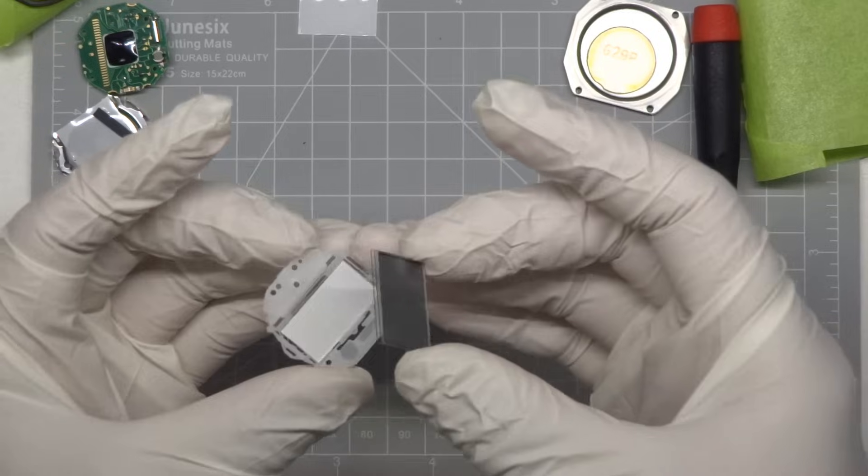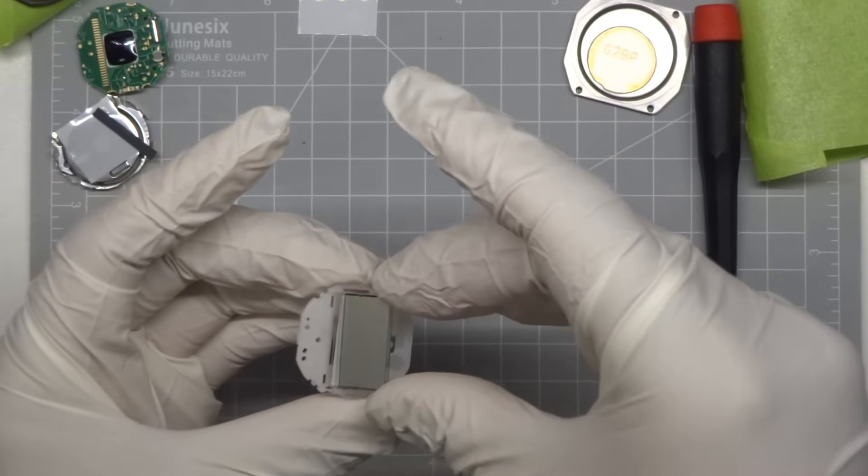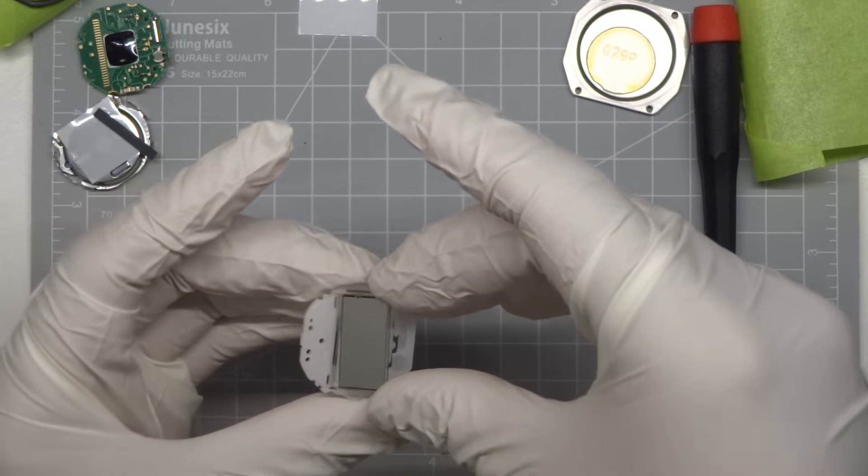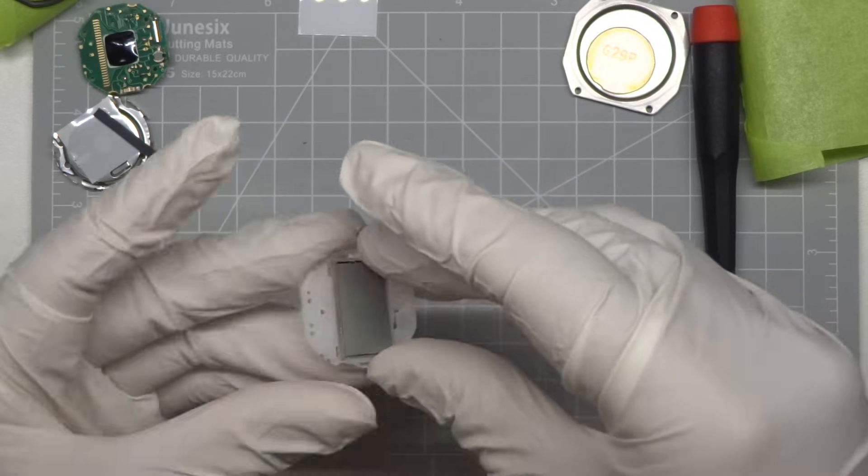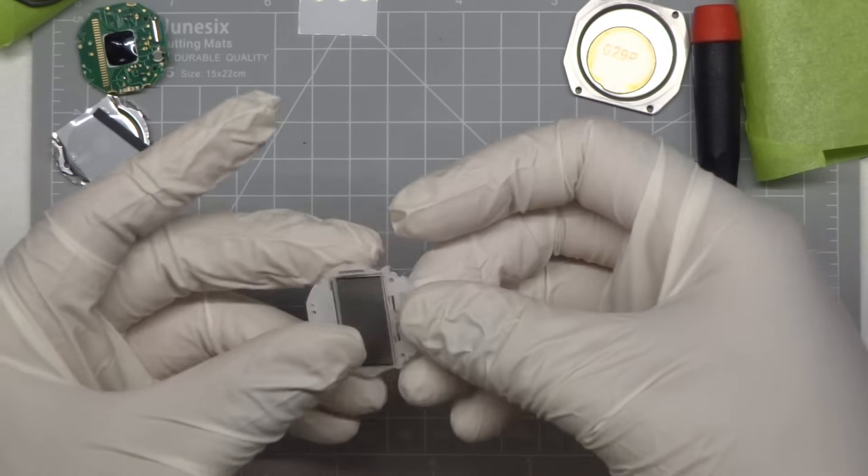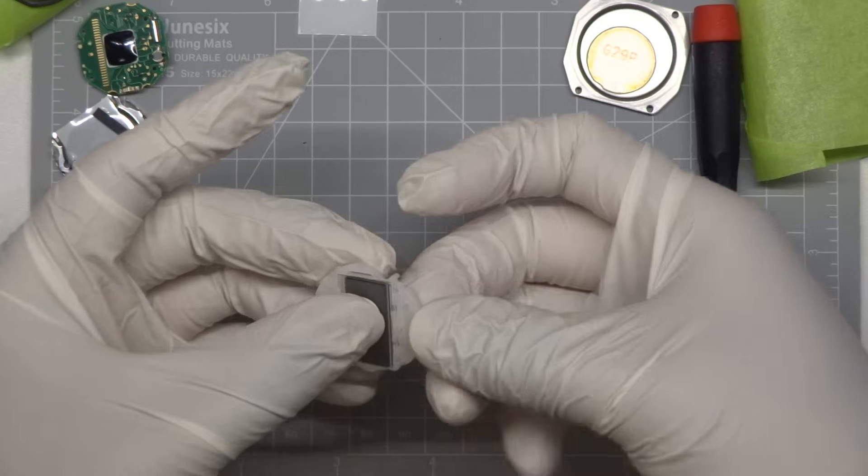Next, wedge the top of the LCD glass inside the holder where the zebra strip will go. The top of the LCD will have three dots on it and be thinner. Carefully flap the glass down.